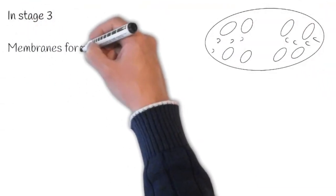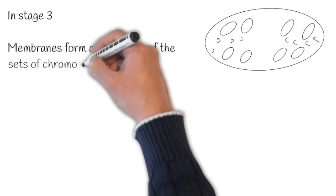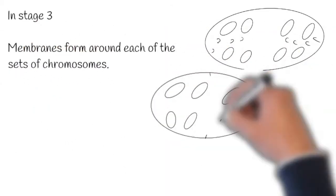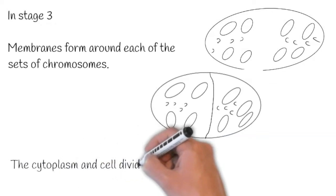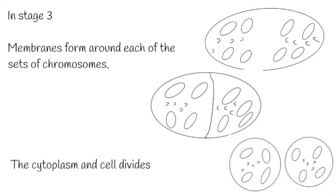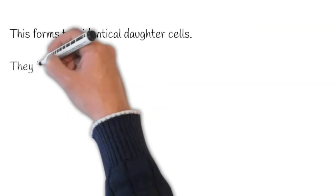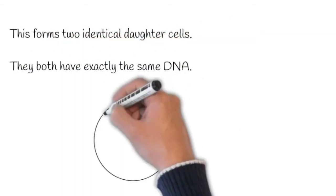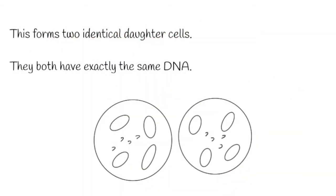In stage three, new membranes form around each of the sets of chromosomes. The cytoplasm and cells divide. This forms two identical daughter cells. They both have exactly the same DNA. The cell has divided into two.